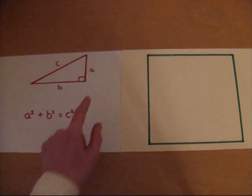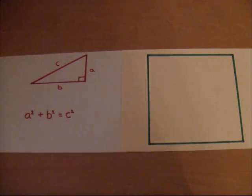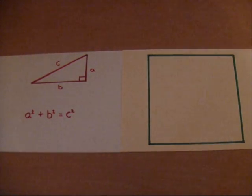Or to put it another way, if I label these sides of the triangle a, b, and c, then a squared plus b squared equals c squared.